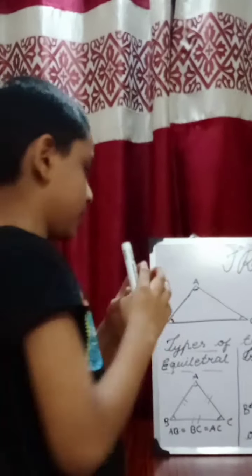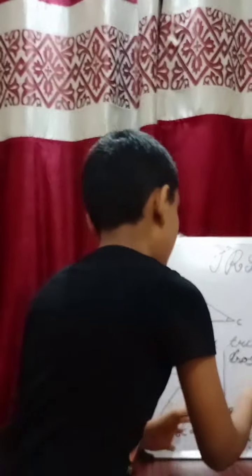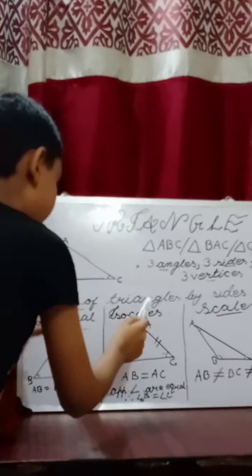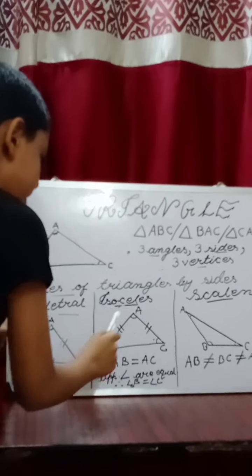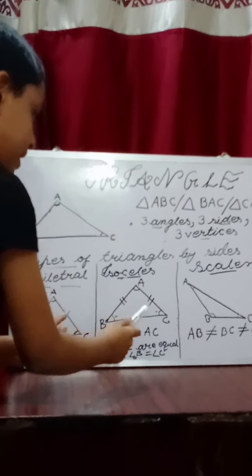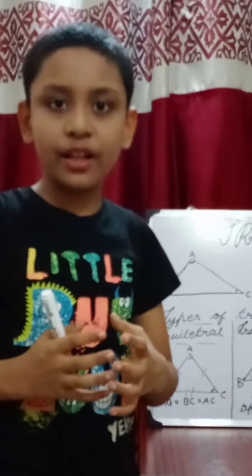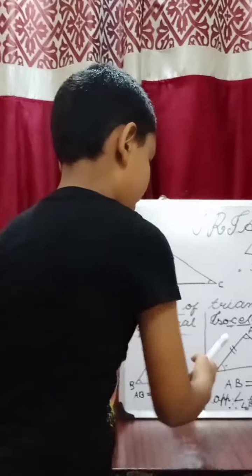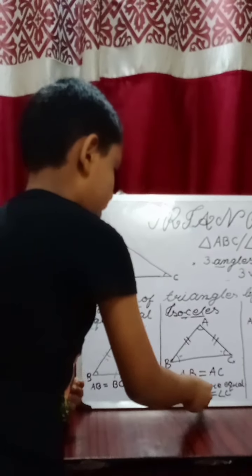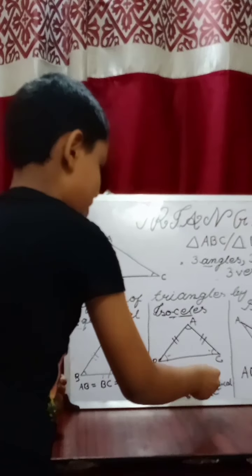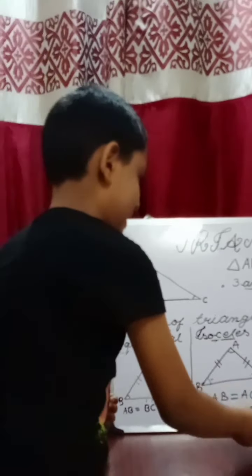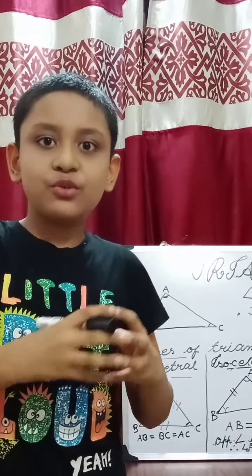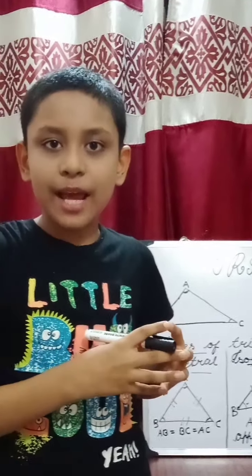In this figure, the opposite angle of side AB is angle C, and the opposite angle of side AC is angle B. Therefore, angle B is equal to angle C.